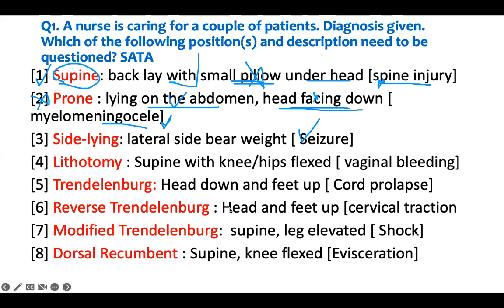Lithotomy position - supine with knee and hip flexed. When we're doing vaginal exams, this patient needs a vaginal exam for bleeding - yes, this is right, so we don't need to intervene. You flex the hip, the knee, and the leg - that is called the lithotomy position. You can use it for vaginal bleeding or rectal exam. So this patient, we don't need to intervene.